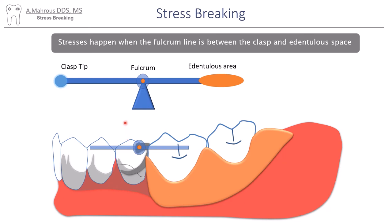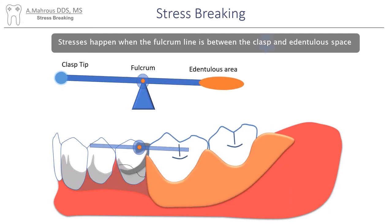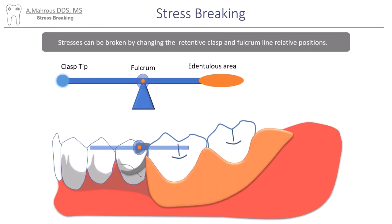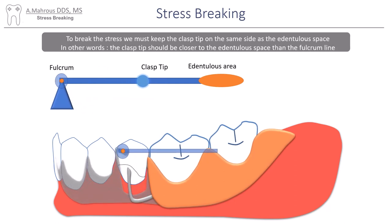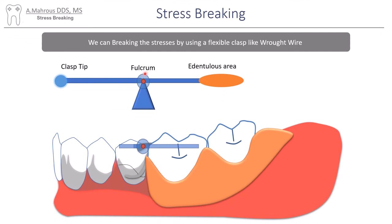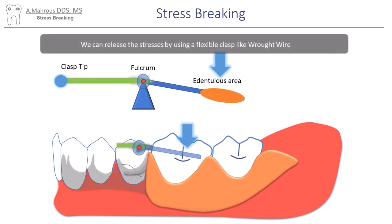To summarize: the problem happens because the fulcrum line exists between the clasp tip and the edentulous area. When the denture base moves down, the clasp tip moves upwards, exerting forces onto the abutment tooth. To solve this, we could shift the relationship between the clasp and the fulcrum so the clasp tip is on the same side as the edentulous segment — when the denture base moves down, the clasp tip also moves down. Alternatively, you can keep the fulcrum where it is and change the type of clasp: a wrought wire clasp will absorb the forces and not transmit them to the abutment.